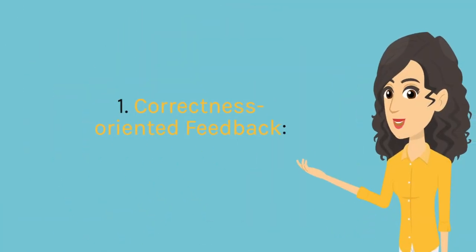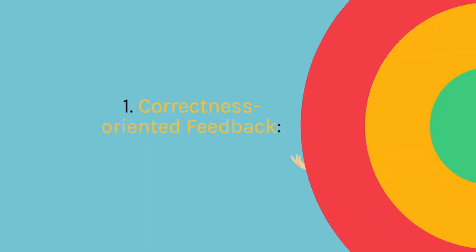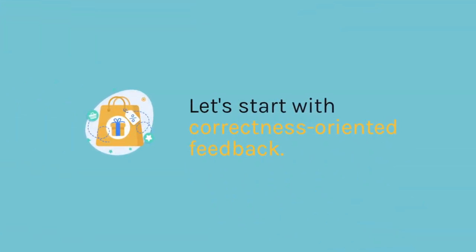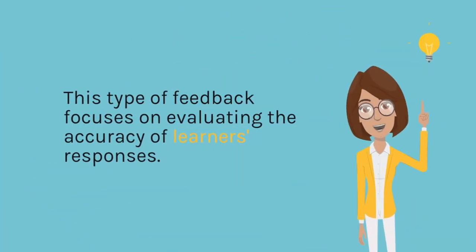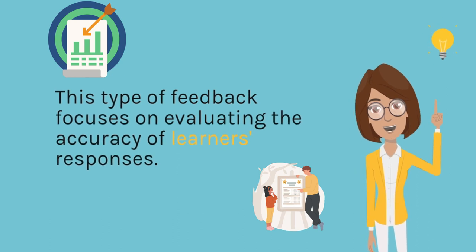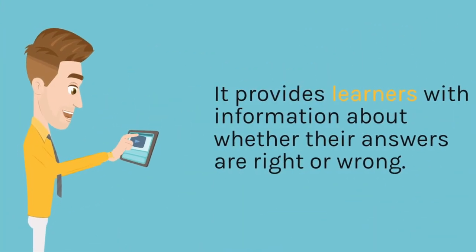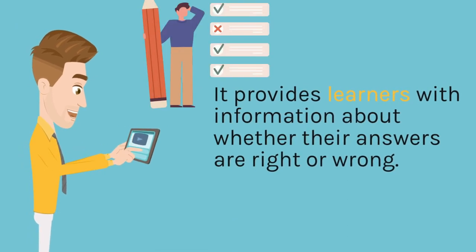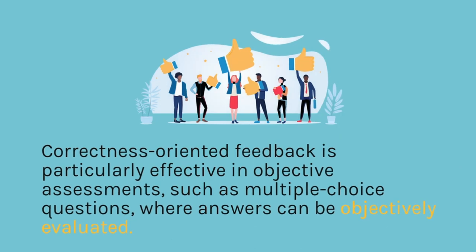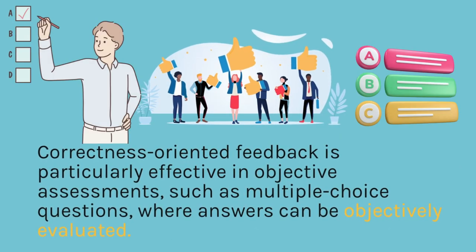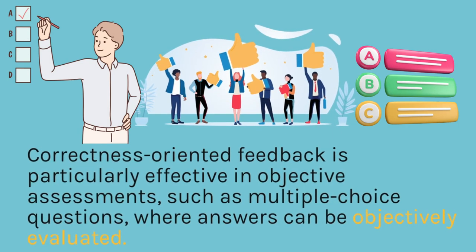Correctness-Oriented Feedback. Let's start with Correctness-Oriented Feedback. This type of feedback focuses on evaluating the accuracy of learners' responses. It provides learners with information about whether their answers are right or wrong. Correctness-Oriented Feedback is particularly effective in objective assessments, such as multiple-choice questions, where answers can be objectively evaluated.